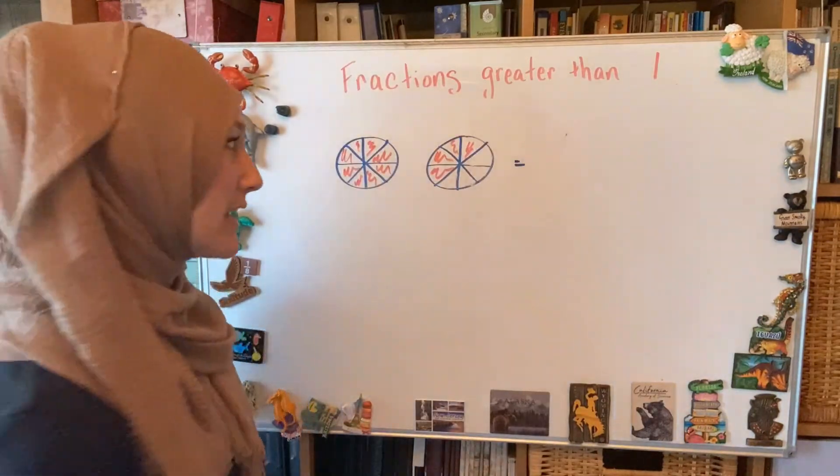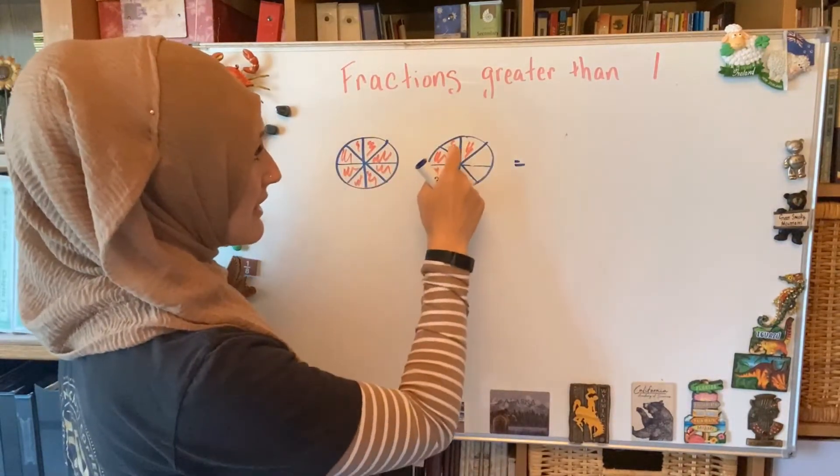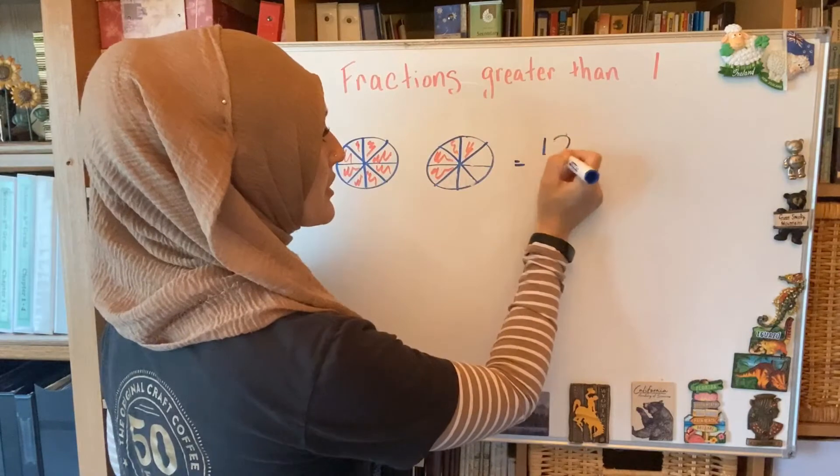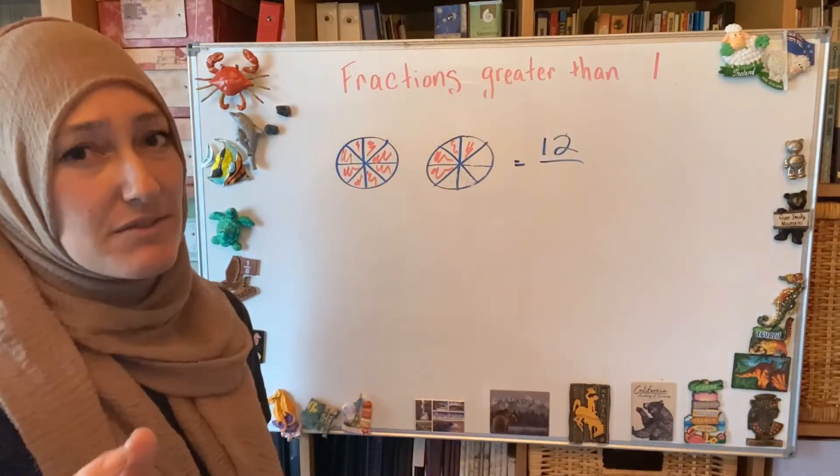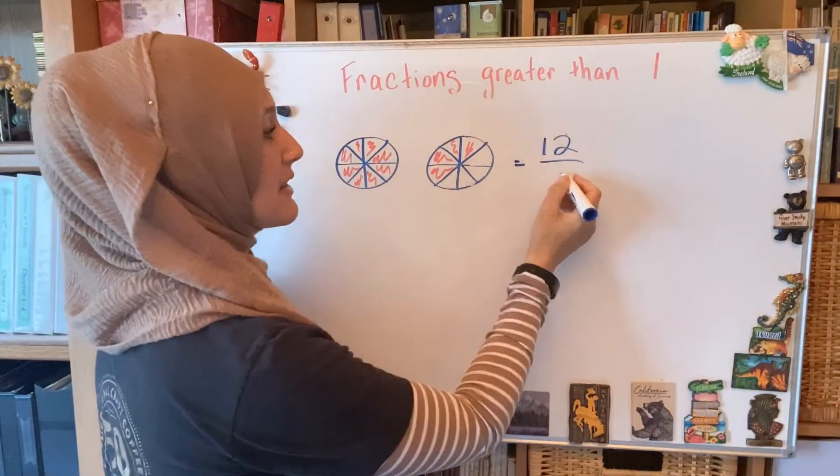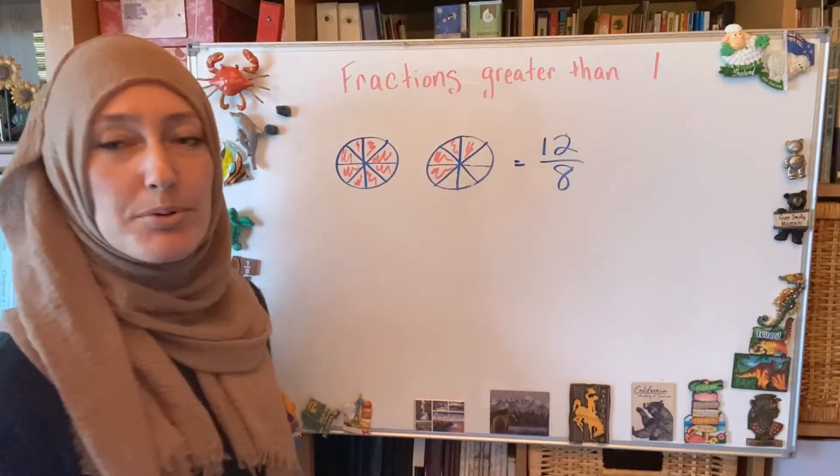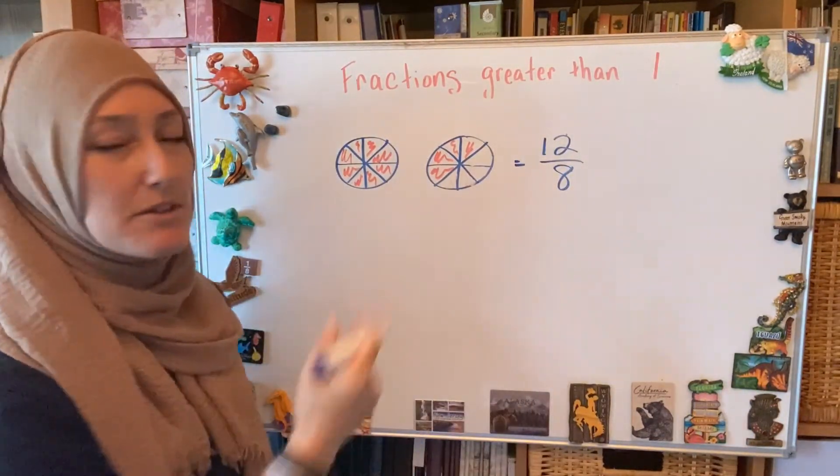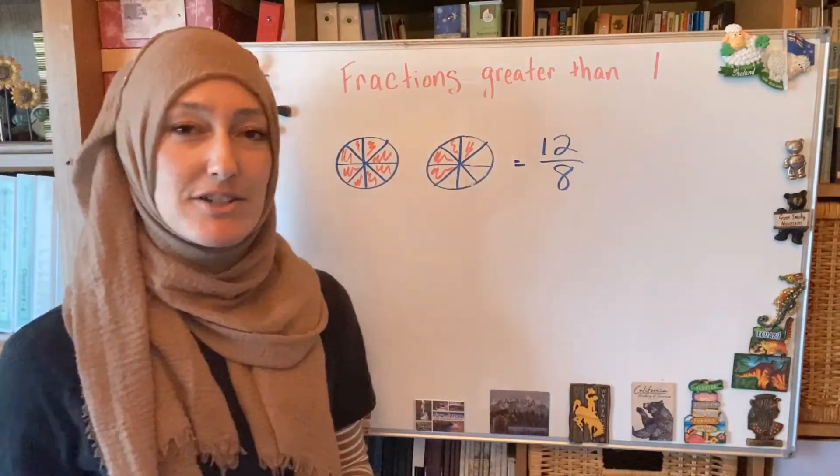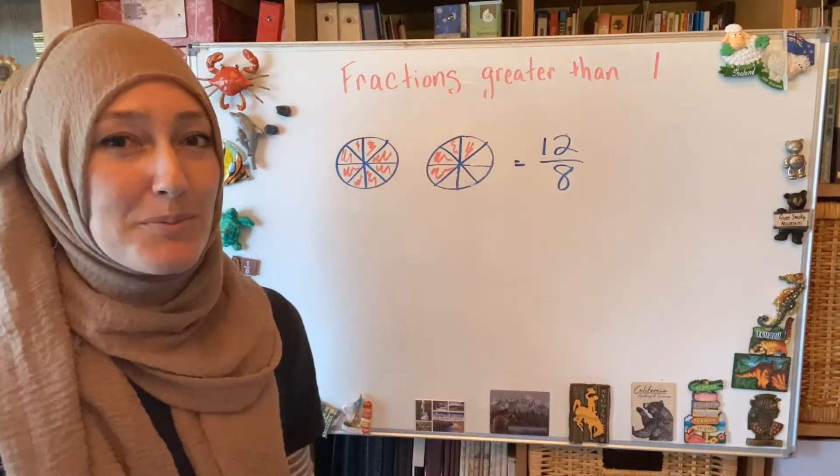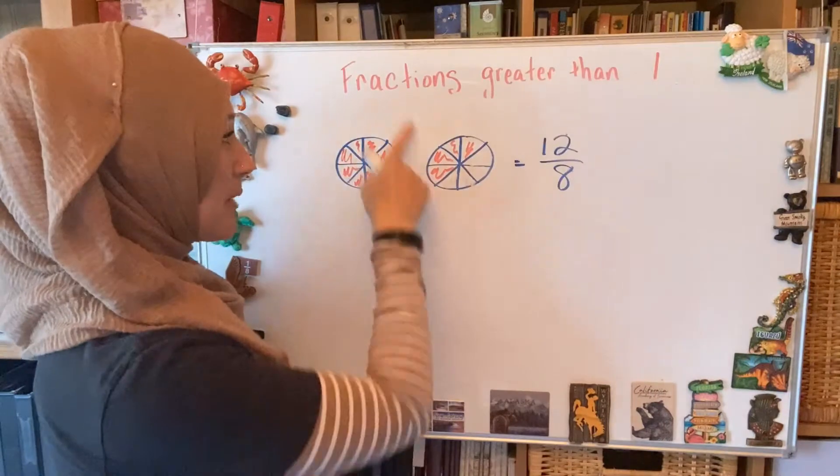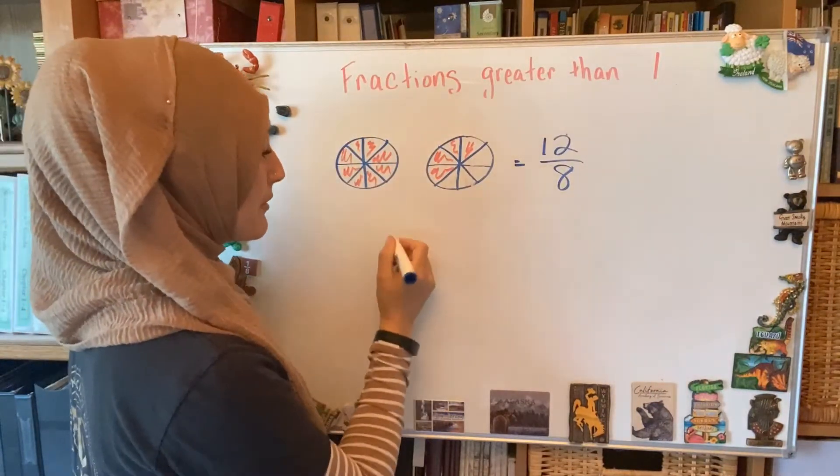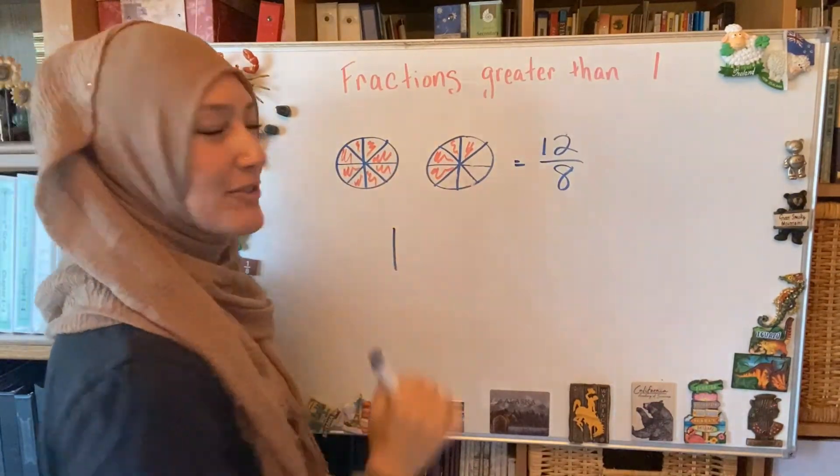How many parts are shaded? Eight, nine, ten, eleven, twelve. So twelve are shaded. And what's the size of the part? It's still eight. So my improper fraction, or my fraction greater than one, is going to be twelve-eighths. If I turn that into a mixed number, the model makes it super easy because how many wholes do I have? I have one whole.